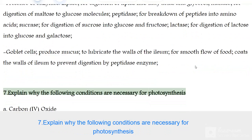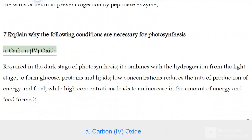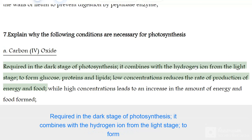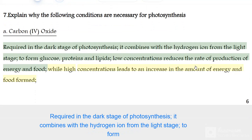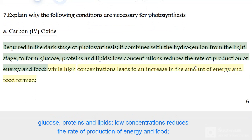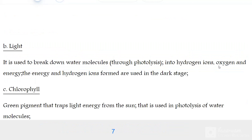Explain why the following conditions are necessary for photosynthesis. Carbon dioxide is required in the dark stage of photosynthesis; it combines with the hydrogen ions from the light stage to form glucose, proteins, and lipids. Low concentrations reduce the rate of production of energy and food, while high concentrations lead to an increase in the amount of energy and food formed.